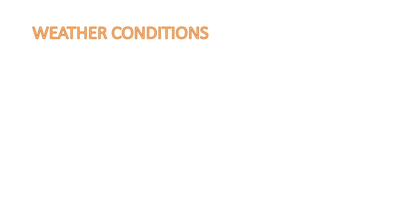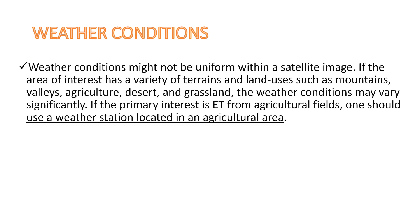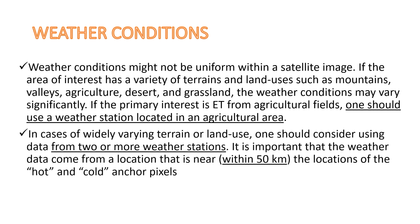Weather conditions might not be uniform within a satellite image. If the area of interest has a variety of terrain and land use such as mountains, valleys, agriculture, deserts, and grasslands, the weather conditions may vary significantly. If the primary interest is evapotranspiration from agricultural fields, one should use a weather station located in an agricultural area. In cases of widely varying terrain or land use, one should consider using data from two or more weather stations. It is important that the weather data come from a location that is near — within 50 km — of the locations of the hot and cold anchor pixels.